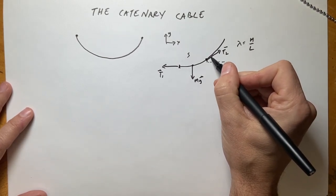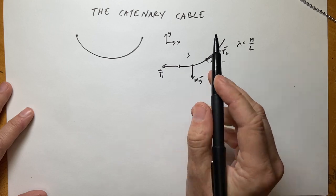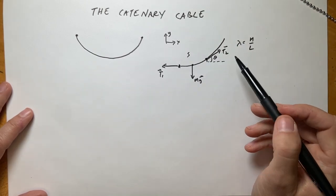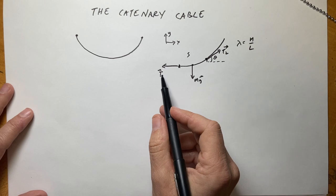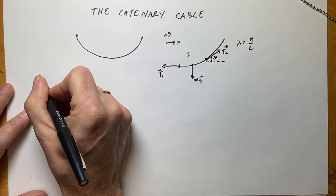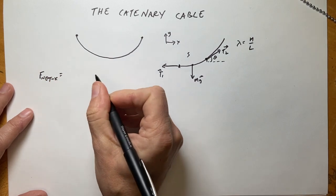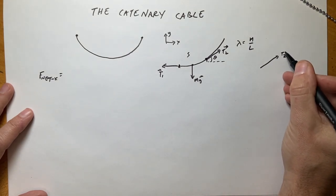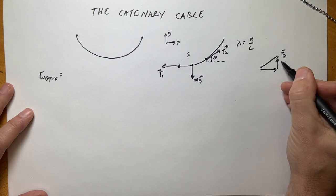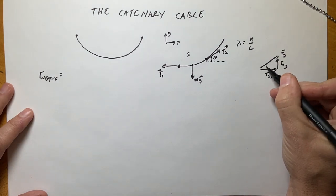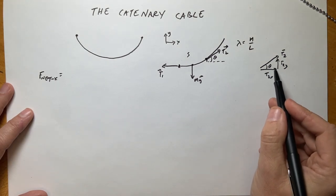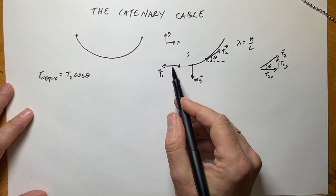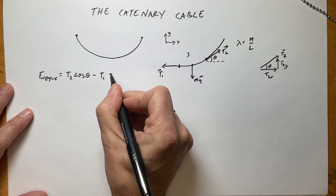Let's say this angle is theta. I picked this point because everyone else did it. This means I have one of these forces in just the x-direction and one of the forces in the x and y-direction. Writing F_net in the x-direction: I have T2x, which is the adjacent side, equal to T2 times cosine theta. Then I have minus T1 equals zero.